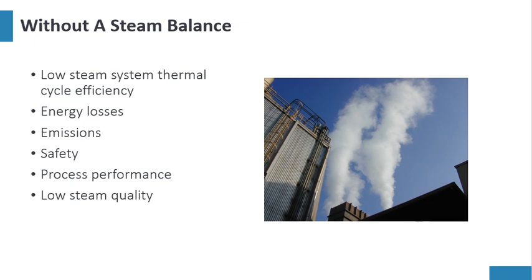Without a steam balance, we have low steam system thermal cycle efficiency, or we don't even know where steam system thermal cycle efficiency is. We have energy losses. Basically, we're out here allowing steam to vent to atmosphere and heating up the birds as they fly by. Energy loss emissions comes into safety. Understanding where the safety valves are placed in the steam system is very critical. Process performance and understanding how to correct low steam quality. A balance gives us the ability to identify where we need to improve the steam quality.